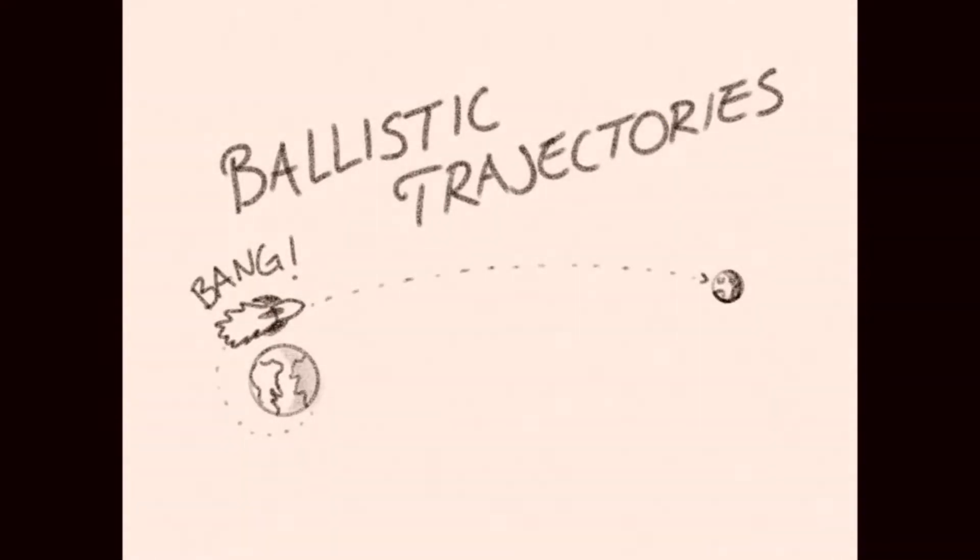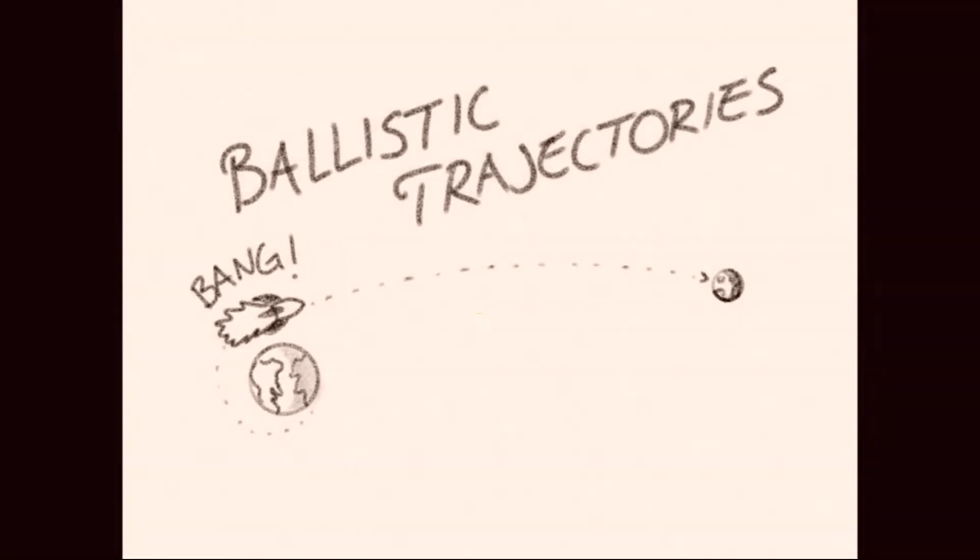The rapid fuel consumption restricts chemical rockets to ballistic trajectories, where the craft spends the majority of its time drifting through empty space. This can be quite slow for transits to distant celestial objects.